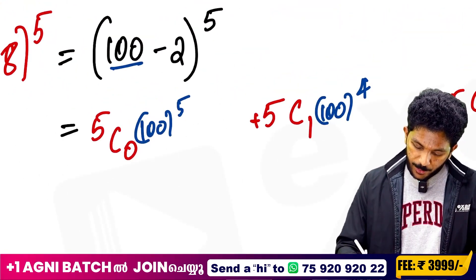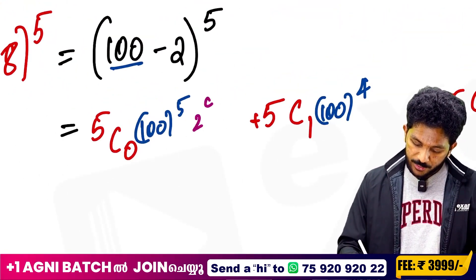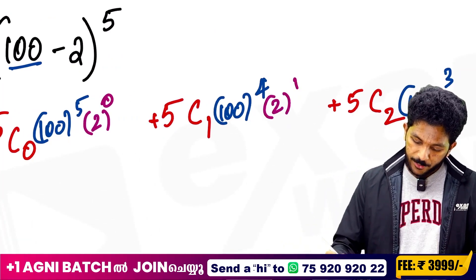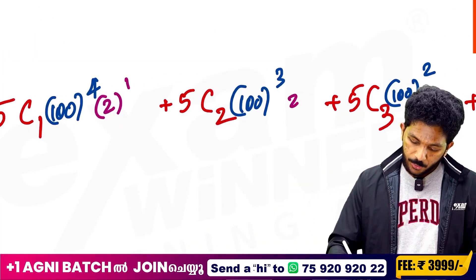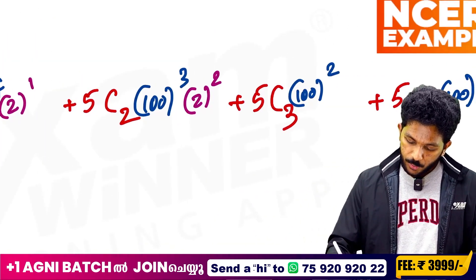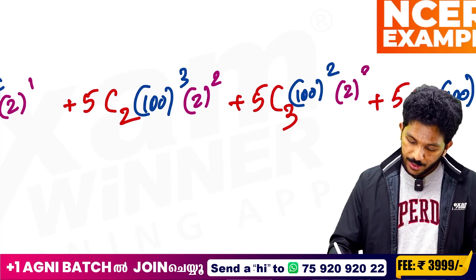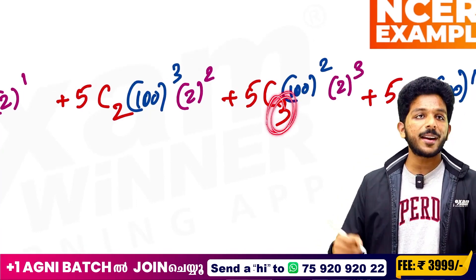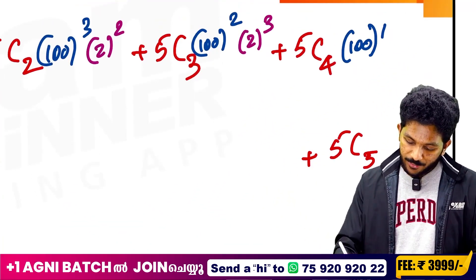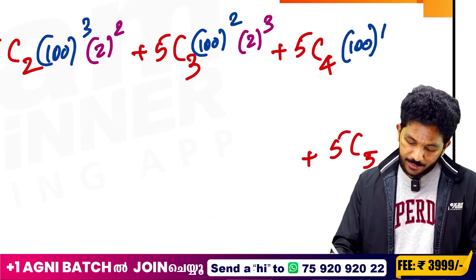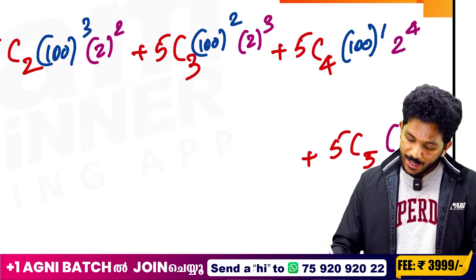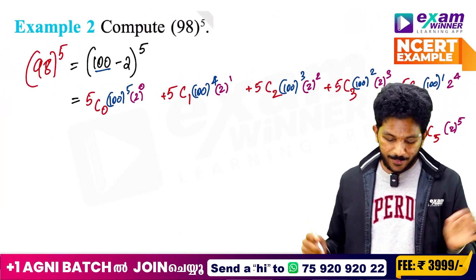The purple color is 2. 2 raised to 0. 2 raised to 1. 2 raised to 2. 2 raised to 3. That's the number. And 5C4, 2 raised to 4. And lastly, 2 raised to 5.